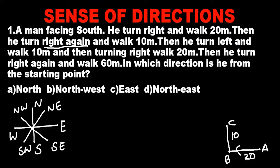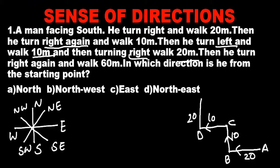He turns left and walks 10 meters. From C, he turns left and walks 10 meters up to D. Then turning right, he walks 20 meters from D up to E. From E, he turns right and walks up to 60 meters.